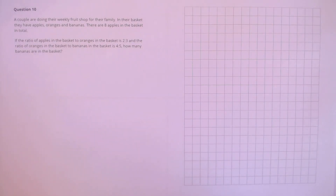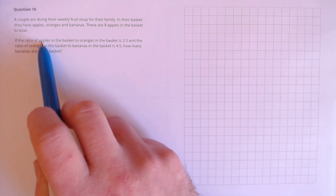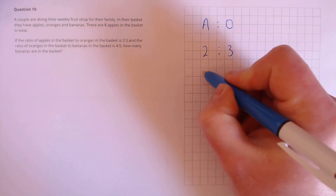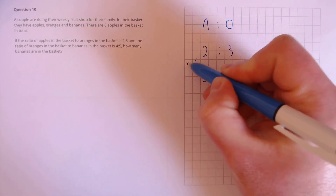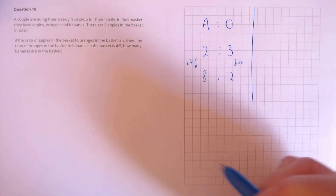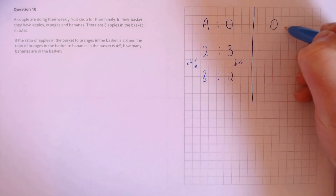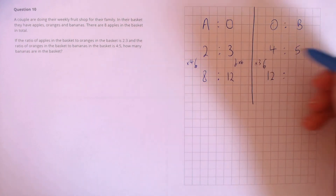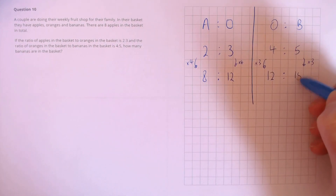Question 10. A couple doing their weekly fruit shop have apples, oranges, and bananas in their basket. There are 8 apples. The ratio of apples to oranges is 2 to 3, and the ratio of oranges to bananas is 4 to 5. How many bananas are in the basket? The ratio of apples to oranges is 2 to 3. With 8 apples, the ratio has been multiplied by 4, so there must be 12 oranges. For bananas, oranges to bananas is 4 to 5, and with 12 oranges the ratio is multiplied by 3, making 15 bananas in the basket.